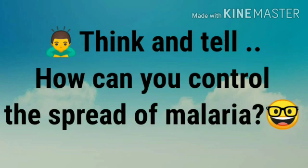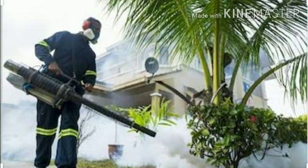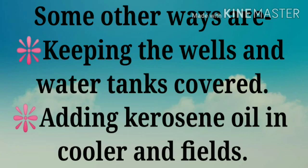Now, my dear students, think and tell how can you control the spread of malaria? Malaria spreads due to mosquito bite, and mosquitoes breed in stagnant water. To prevent the spread of malaria, we can use insecticides like DDT, we can use wire mesh and mosquito nets. Other ways are keeping wells and water tanks covered and adding kerosene oil in coolers and fields.